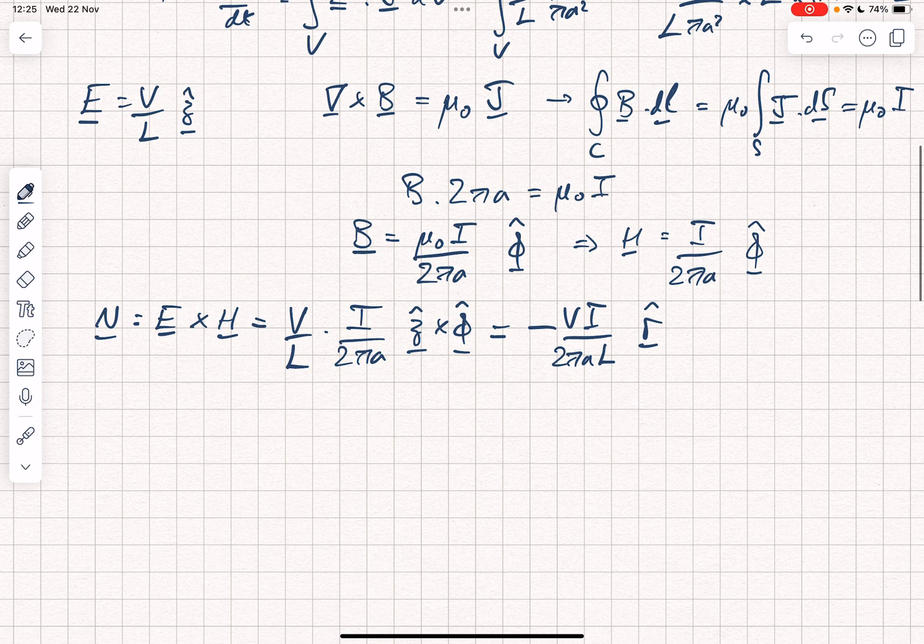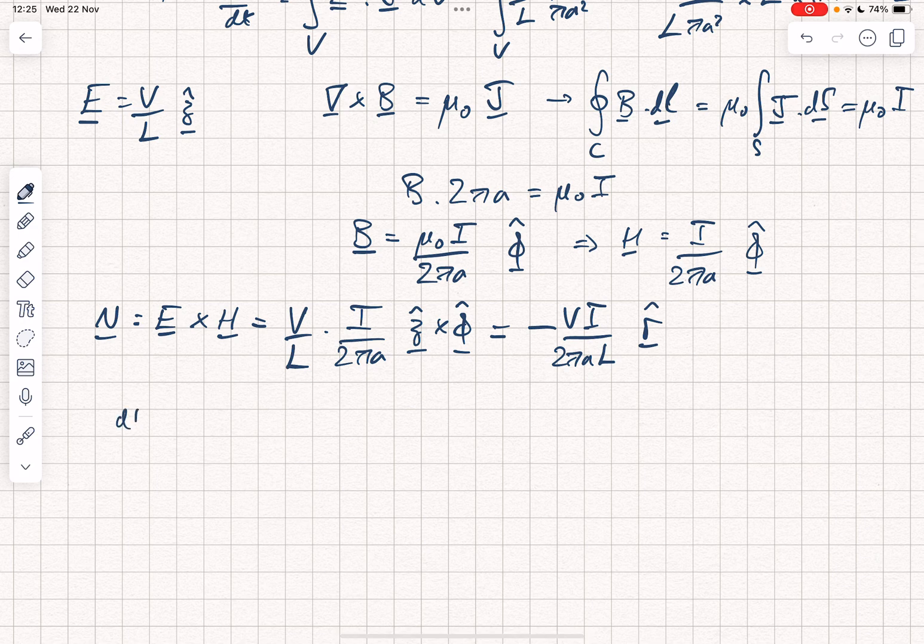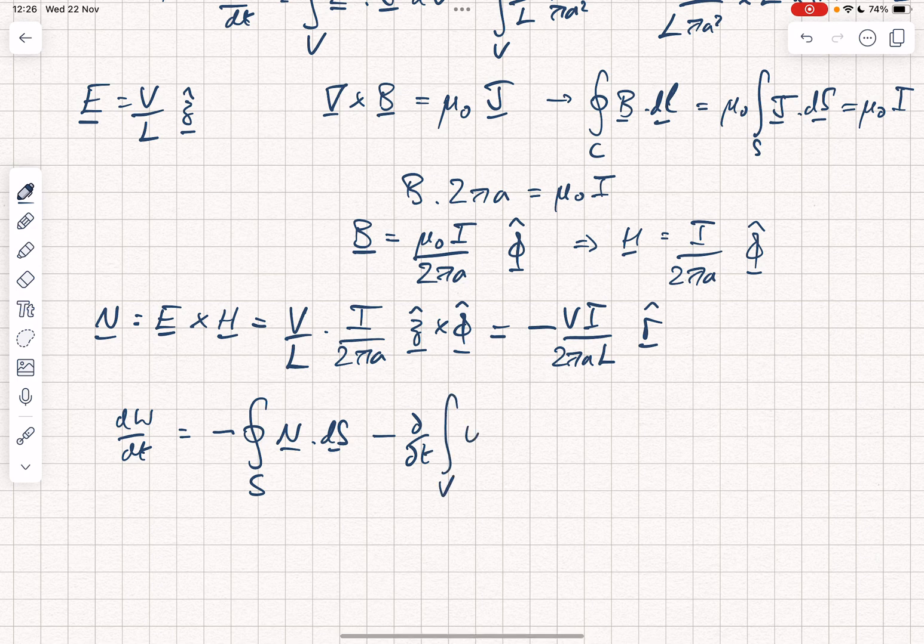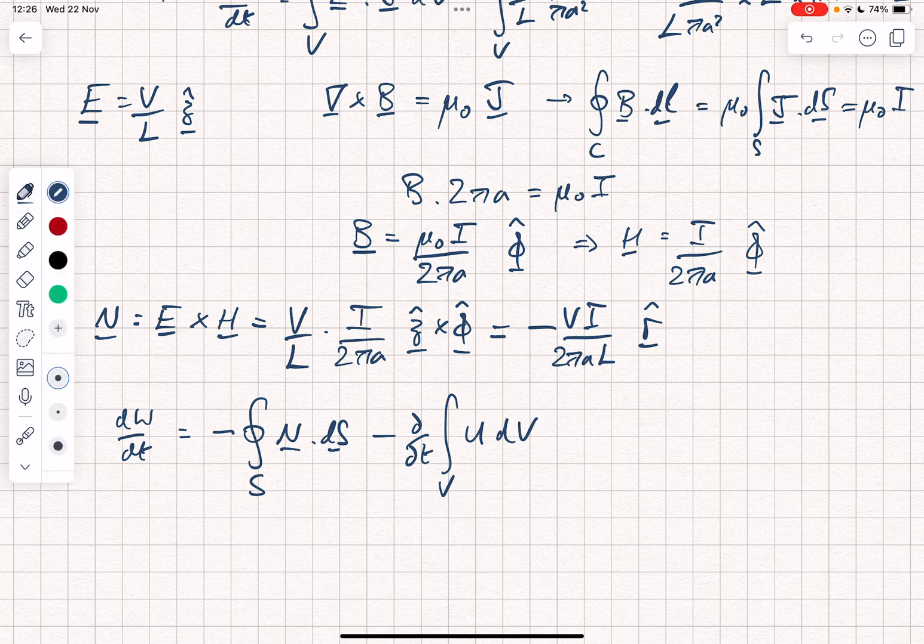Of course, the physical significance we have is that dw by dt is equal to minus the closed surface integral of N dot DS. That's the energy flowing in minus d by dt of the volume integral of the energy density dV. We have constant electric and magnetic fields. Therefore, we can say that this term on the right here is equal to zero.